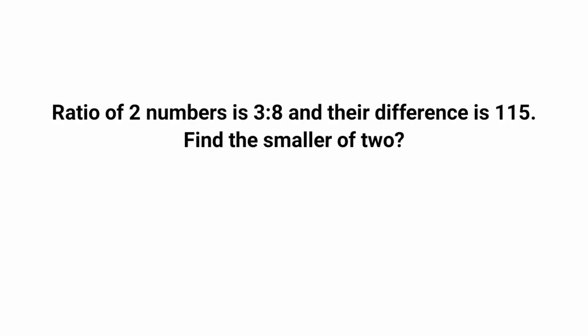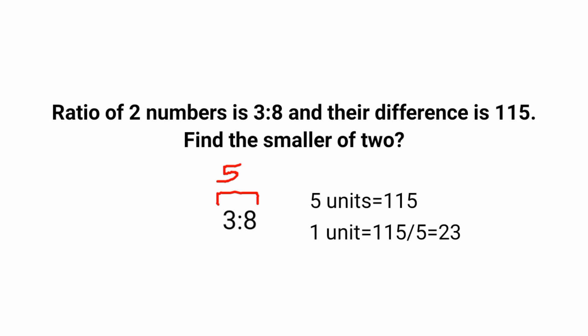Next question: the ratio of two numbers is 3:8 and their difference is 115. Find the smaller of the two. The difference of the ratios is 8 minus 3, which equals 5 units. Since the difference is given as 115, we have 5 units equals 115, so 1 unit equals 115 divided by 5, which is 23. The smaller number corresponds to 3 units, so multiply 3 by 23 to get 69.